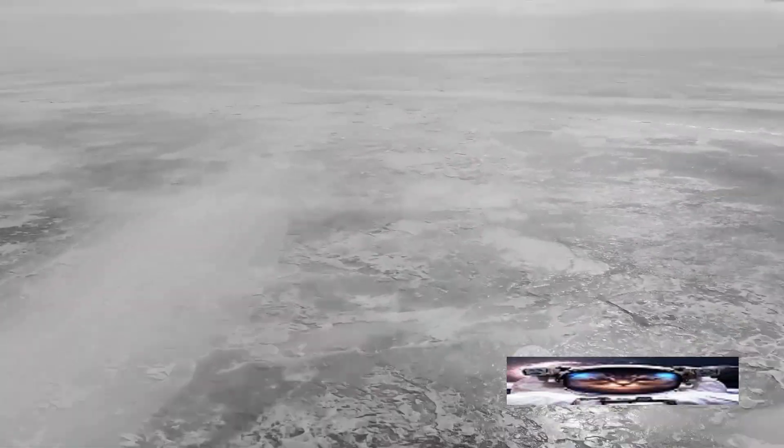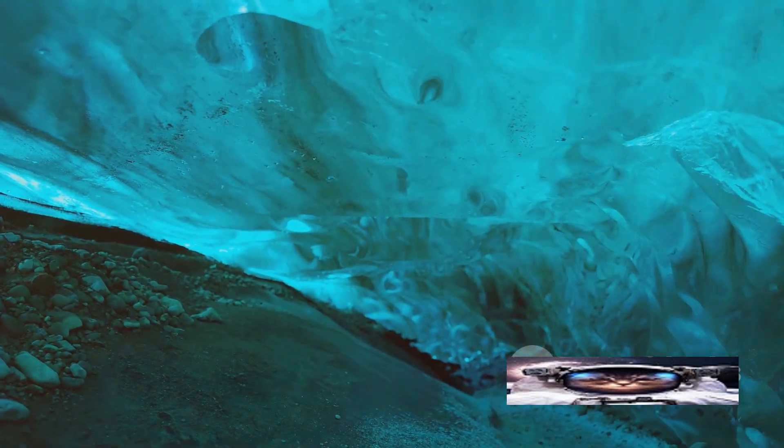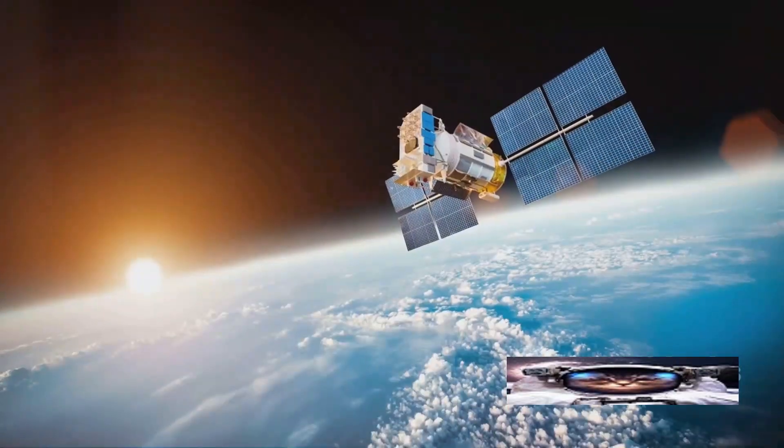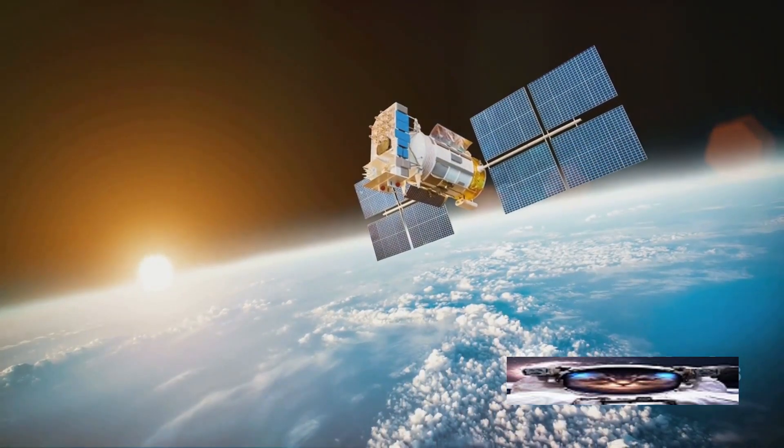Lastly, satellites also keep tabs on greenhouse gas concentrations. Instruments such as spectrometers measure the sunlight reflected and absorbed by these gases in our atmosphere. This allows us to track the levels of carbon dioxide and other greenhouse gases that are driving climate change.